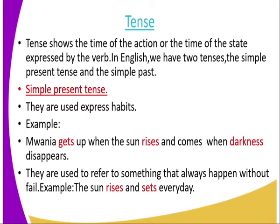Another function of the simple present tense is to refer to something that always happens without fail — something that happens every day or on a regular basis. For example: 'The sun rises and sets every day.' The words that describe the simple present tense here are 'rises' and 'sets.'